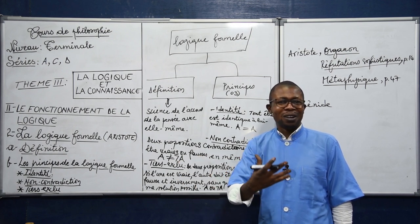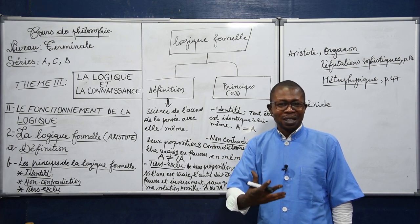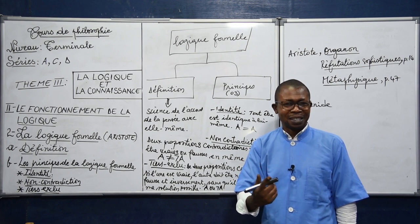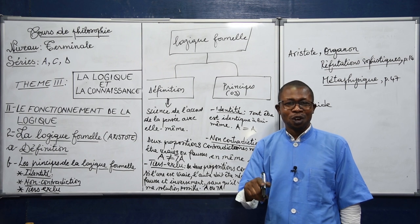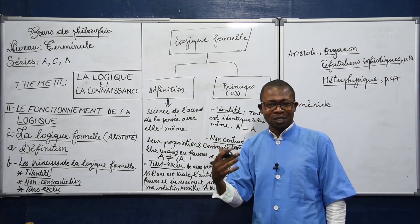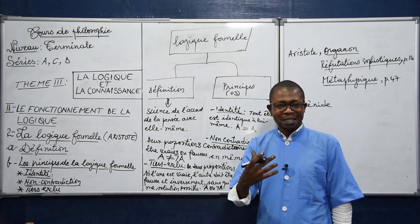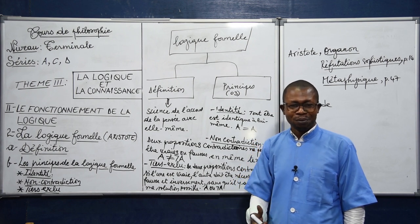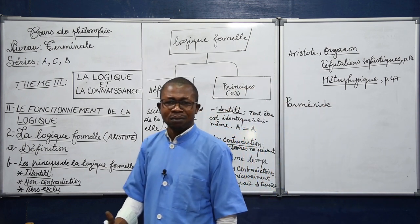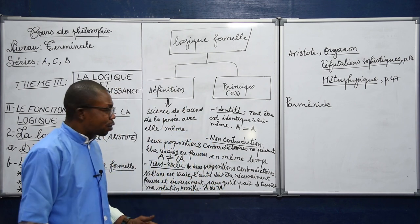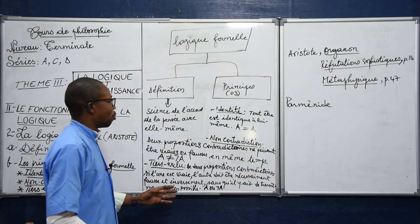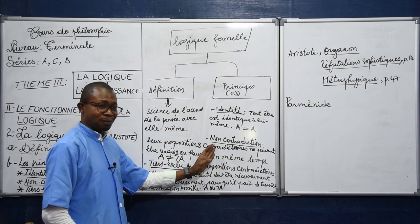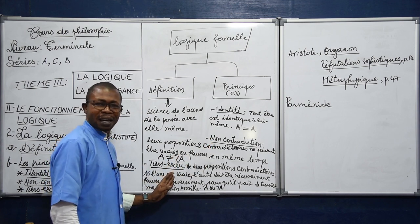La contradiction nous éloigne de la rigueur et de la cohérence. Or, un discours qui n'est ni rigoureux ni cohérent ne peut pas dire la vérité, parce que ce discours va au-delà de l'identité. Un discours vrai est un discours qui est identique à lui-même. Les principes de la logique formelle sont au nombre de trois : l'identité, la non-contradiction et le tiers exclu. Ces trois principes excluent l'opposition et la contradiction.